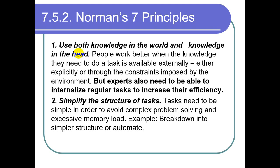People work better when the knowledge they need to do a task is available externally — either explicitly or through the constraints imposed by the environment. For example, if I have to enter some value, I know what value I need to enter, but it must also be implemented through validation checks so that the software constrains what I can and cannot enter, preventing wrong input.